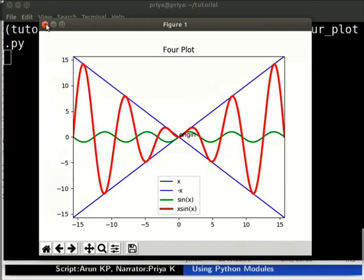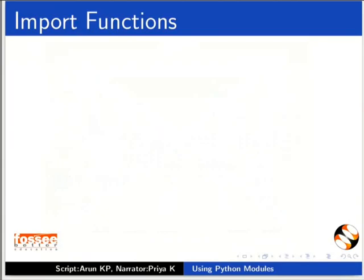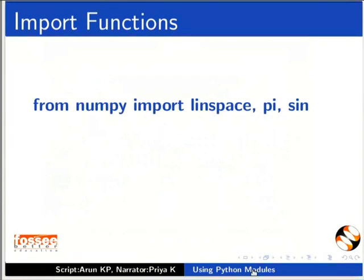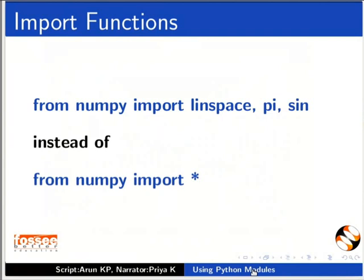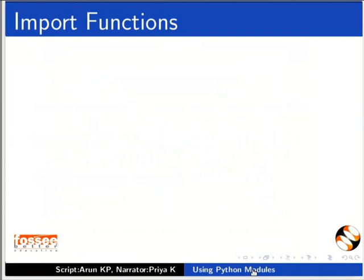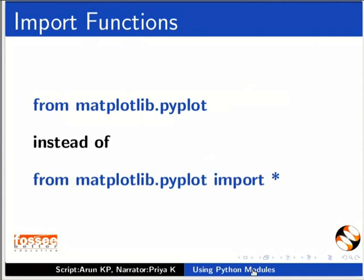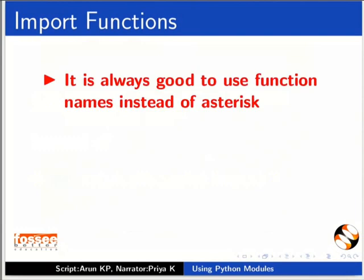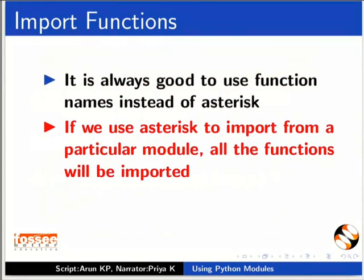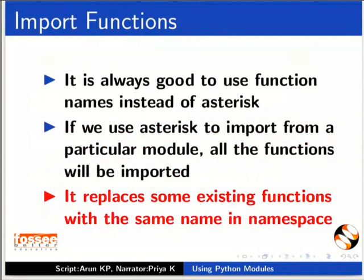Let me close this window. We can import only the functions required from a module, for example: from numpy import linspace, sin — instead of from numpy import *. In the same way, we can import only required functions from matplotlib.pyplot instead of from matplotlib.pyplot import *. It is always good to use specific function names instead of asterisk, because using asterisk imports all functions and may replace existing functions with the same name in the namespace.